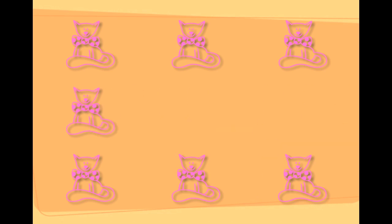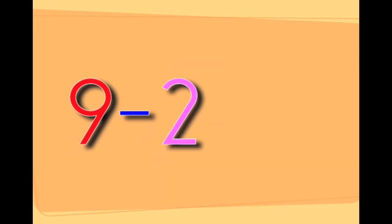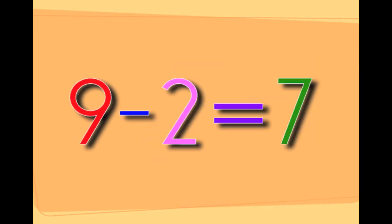There are nine cats. Taking two cats away from the nine cats leaves you with seven cats. Nine minus two equals seven.